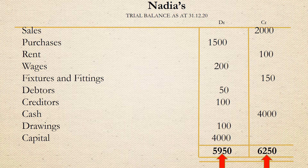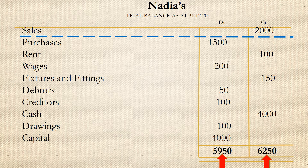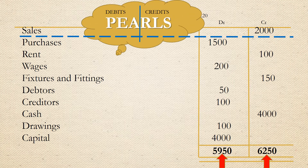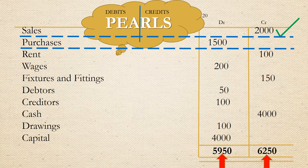So we will start off with sales. Referring to the acronym PEARLS, the balance of sales is in the correct column. The tutorial on the acronym is also in the description below. Purchases have a debit balance, so this entry is correct.